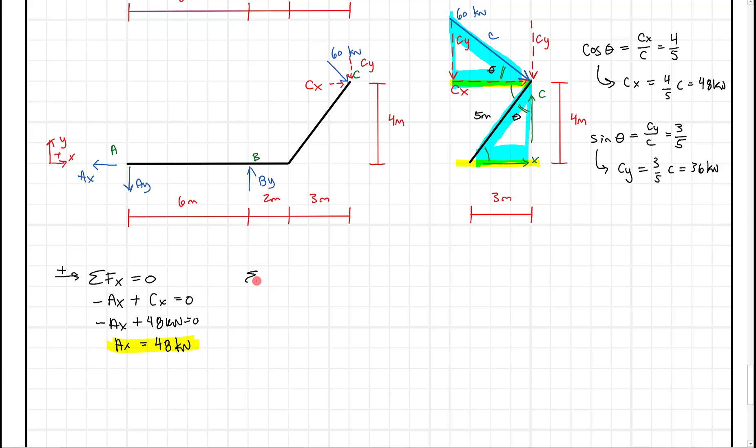And then we can go to the sum of the forces in the y-direction equals zero. If we go up as positive, we get minus Ay plus By minus Cy equals zero. And the problem is, now we have two unknowns - we have Ay and By. We can rewrite this, say Ay plus By equals 36 kilonewtons. But we still have two unknowns. So we need to apply our third equation, the sum of the moments.